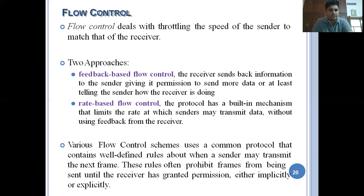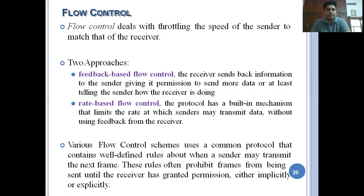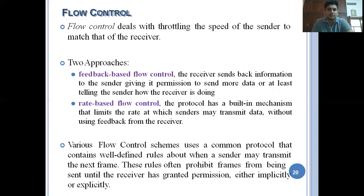So our four major responsibilities of the data link layer are: first, it provides services to the network layer - accessing data packets from the sender-side network layer and transporting them to the receiver-side network layer. Second, framing - converting packets into frame format, applying character stuffing or bit stuffing, and transmitting. Third, error control using acknowledgements, timers, and sequence numbers. Fourth, flow control.